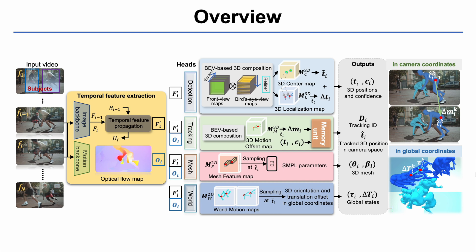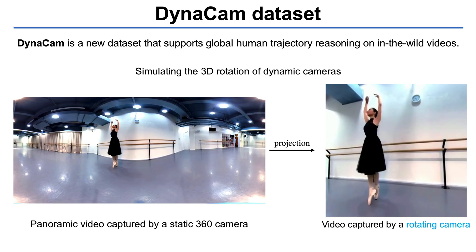Starting with the 3D position of the subjects in the first frame in camera coordinates, we accumulate the 3D translation offsets to obtain the 3D trajectory in global coordinates. To support in-the-wild global trajectory reasoning, we collect a new dataset named DynaCam.